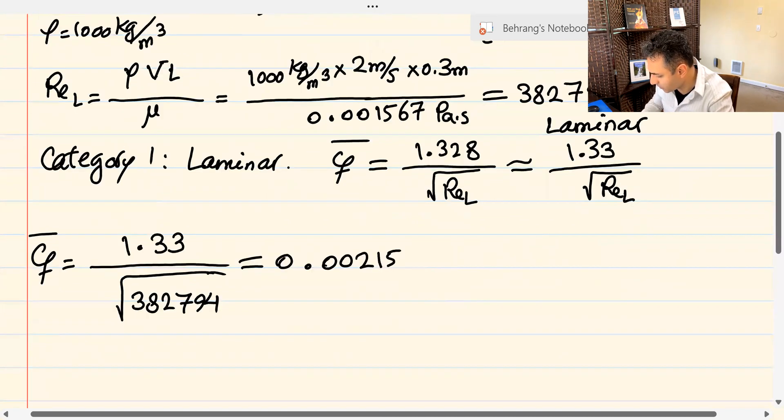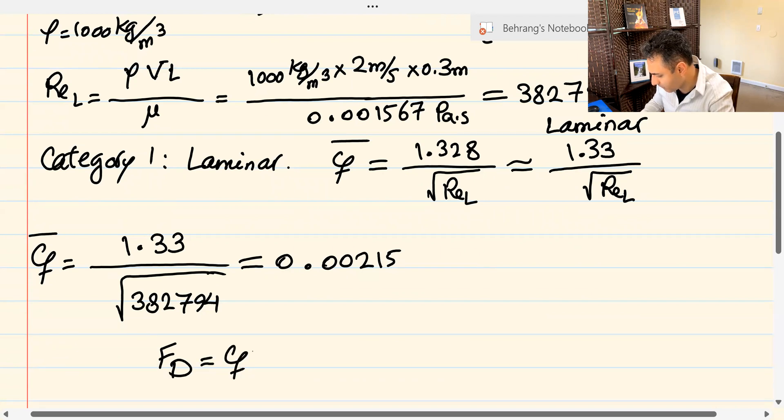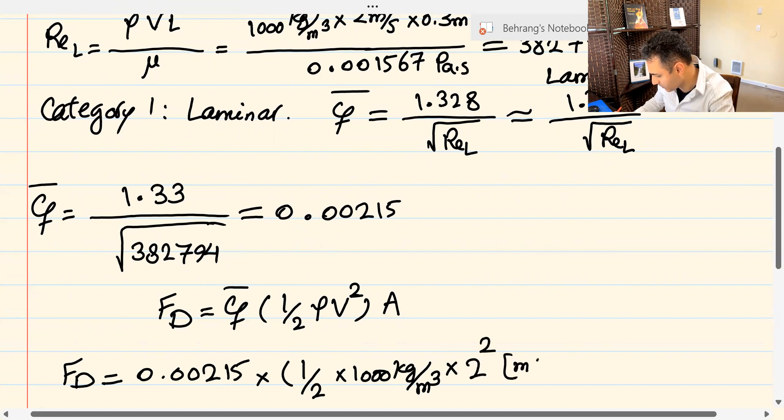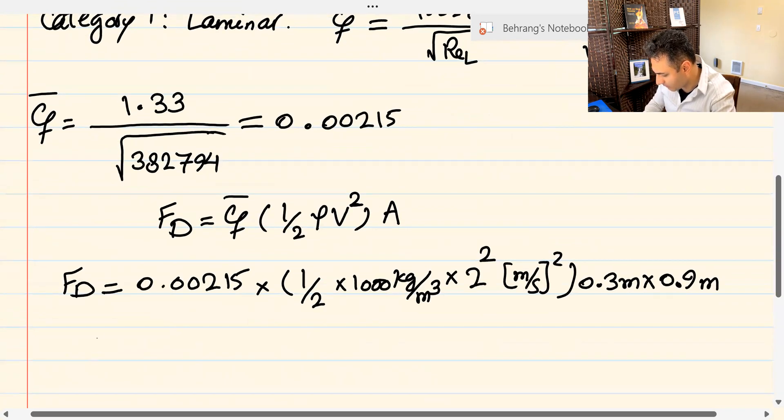So you want to calculate the value of the drag force. The drag force in this case would be CF average times dynamic pressure, that's the dynamic pressure times the total area. So let's see what we have here. The friction coefficient is 0.00215 times dynamic pressure, 1 over 2 times 1000 kilograms per meters cubed times velocity squared. That would be 2 squared. That would be meters seconds squared, the unit of this. And times area. Area is 0.3 meters times 0.9 meters. So finally, you calculate this whole thing, and the drag force turns out to be 1.161 Newton.